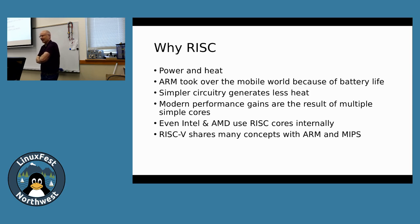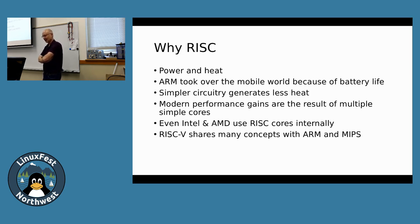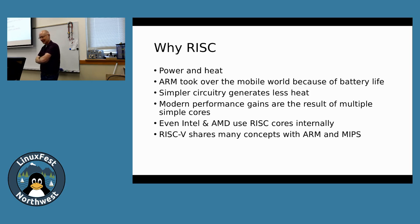Why are simpler instruction sets good? The main reason comes down to power and heat. Why do cell phones use ARM processors rather than Intel? Simpler circuitry produces less heat and uses less power. As we've switched to a mobile world, that's become more and more important. ARM really took over the mobile world because battery life is better and circuits are simpler and produce less heat. Modern performance gains are usually the result of having multiple simple CPU cores rather than having just one big complicated one. RISC-V is the new player, sharing many concepts with ARM, MIPS, and other RISC-based processors.